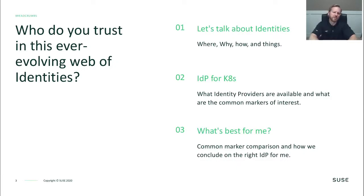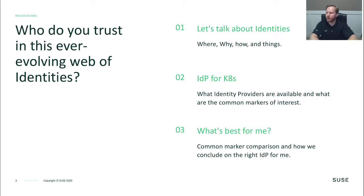So who do you trust in this ever-evolving web of identities? I hope to be able to talk about identities — the where, why, how — and identity providers for Kubernetes specifically: what identity providers are available, what the common markers of interest are, what common marker comparisons are available today, and how we can conclude on the right identity provider for me.